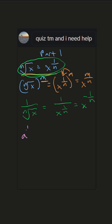Now how about if we have something in this form: a to the 1 over n, and we want to move it back to the other form? You just take the denominator of the exponent and put that in the root, so it'll be the nth root of a. It's just the opposite of what we did up here.